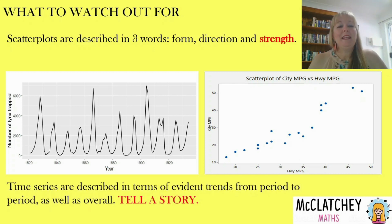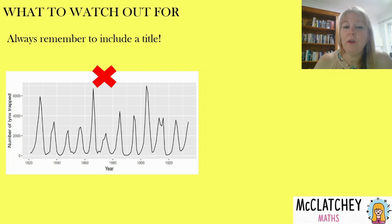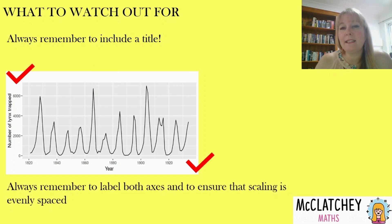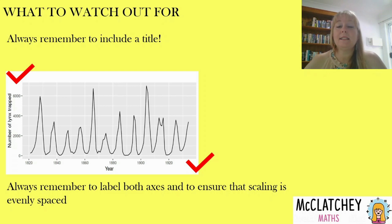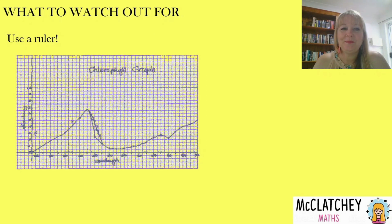For both types of graphs, always remember to include your title — really, really important, and not having one would be a no-no. Always make sure you've got your axes labelled and that your scaling is correct. Remember, if you've got time on the x-axis, the space between each period of time should be identical. So if you've got a centimetre between the first two years, the next two years should also be a centimetre. And please use a ruler — your teachers know you have rulers, so make sure you use them on your exam when you're joining the dots.